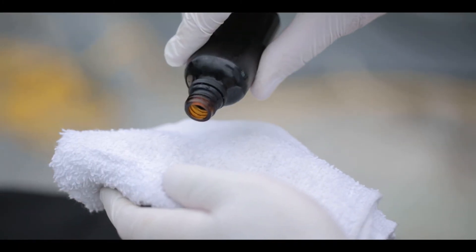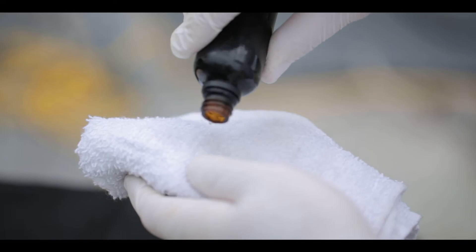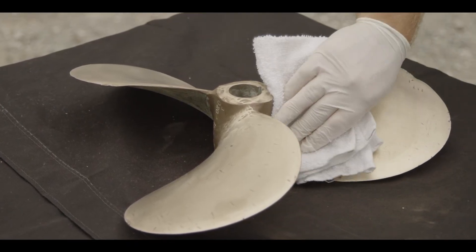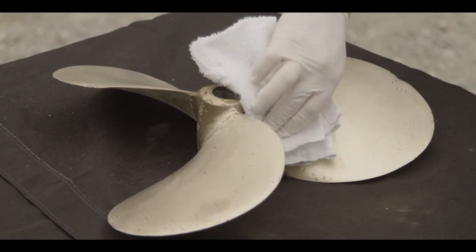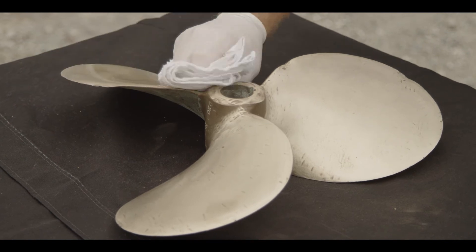Now, dampen a clean cotton cloth with GlideCoat Surface Prep. Thoroughly wipe down all blades and areas to be coated. Repeat a second time to ensure that all surface areas have been cleaned.